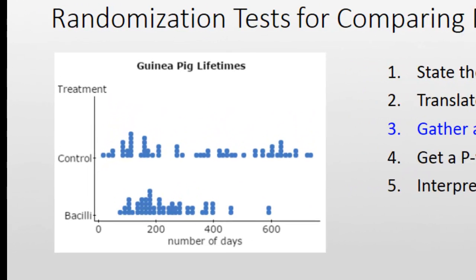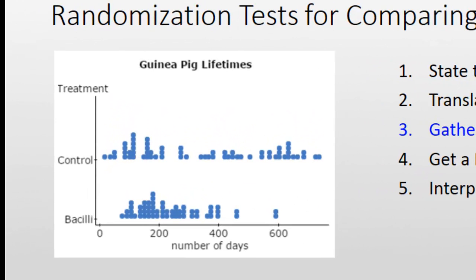On to the data. Since it's quantitative, we want to compare the two groups. Here's a dot plot that allows us to do that. We notice that the bacilli group is skewed to the right and there are two potential outliers — the box plots will confirm those as outliers. We also notice that those two guinea pigs in the bacilli group lived almost 600 days. The control group, which almost looks bimodal, has quite a spread in lifespan days.